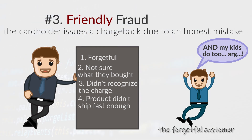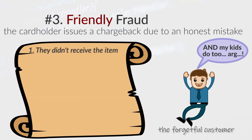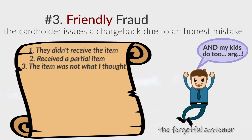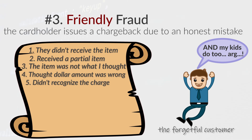Here's a quick list of the main reasons why chargebacks could occur. Number one: they didn't receive an item they ordered. Number two: they didn't receive all of it — only part of it was delivered if it was a physical product, or only part of it was completed if it was a service. Number three: they feel that a product or service was substandard or not what was represented — a damaged item could fall into this category. Number four: they thought they were billed the incorrect dollar amount. Number five: they didn't recognize the charge on their credit card statement. Number six: children making a purchase on a parent's credit card account without their knowledge.